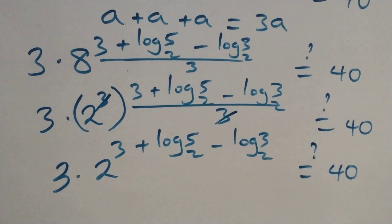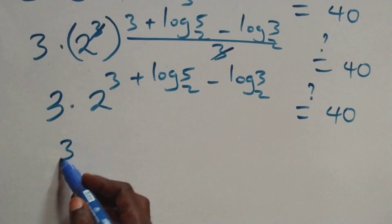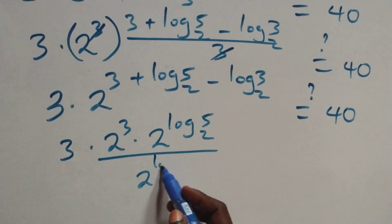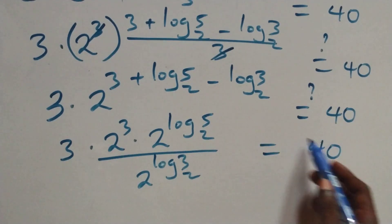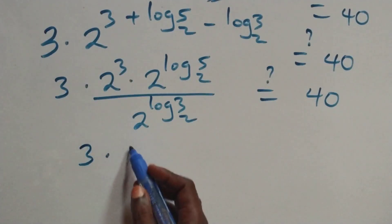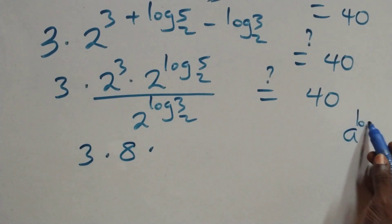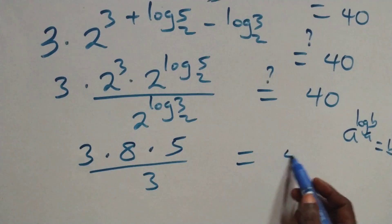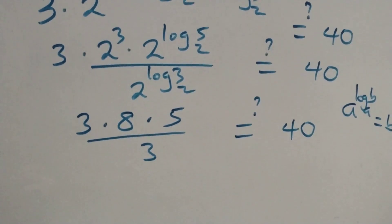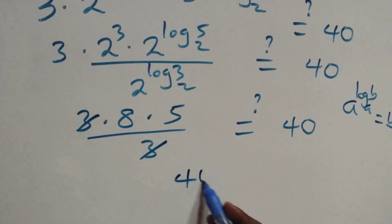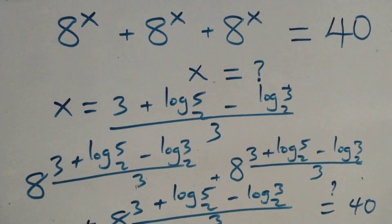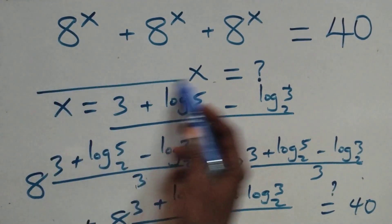Here we apply the law of indices, so we have 3 times 2 raised to the power 3, times 2 raised to the power log 5 base 2, divided by 2 raised to the power log 3 base 2, equals 40. This follows when a raised to the power log b base a equals b. So we have 3 times 8 times 5 over 3, equals 40. The 3s cancel each other, leaving 8 times 5 which is 40, equals 40 on this side. Therefore left hand side equals right hand side, and we conclude x equals 3 plus log 5 base 2 minus log 3 base 2, all over 3, to satisfy this given problem.